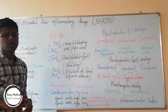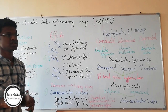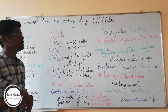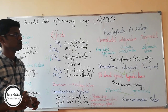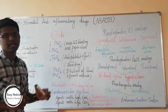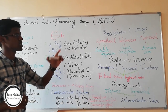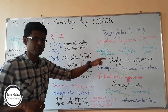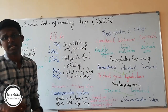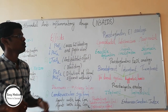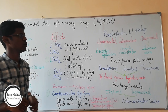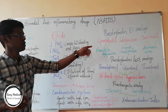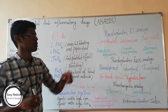Now, with prostaglandins, we also discuss prostaglandin analogs. There are prostaglandin E1 analogs, prostaglandin F2 alpha analogs, and prostacyclin analogs. Examples of prostaglandin E1 analogs are alprostadil, loprostol, and misoprostol.